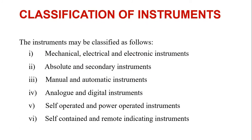We will study six classifications of instruments. These are: first, mechanical, electrical, and electronic instruments; second, absolute and secondary instruments; third, manual and automatic instruments; fourth, analog and digital instruments; fifth, self-operated and power-operated instruments; and sixth, self-contained and remote indicating instruments.